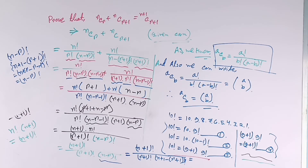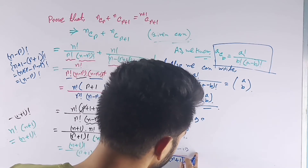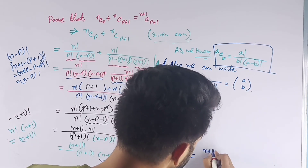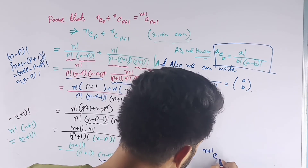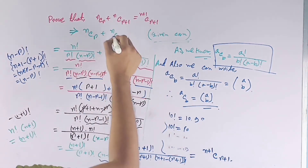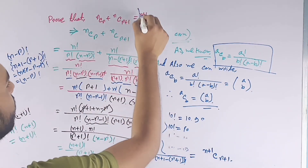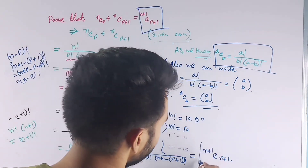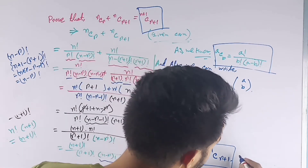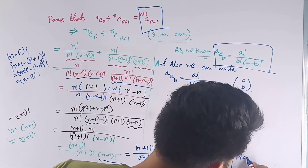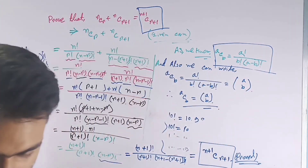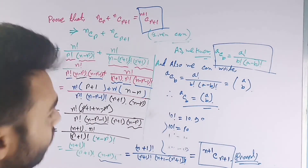So now we can write this as (n+1)C(r+1). This is proved! We did it guys.